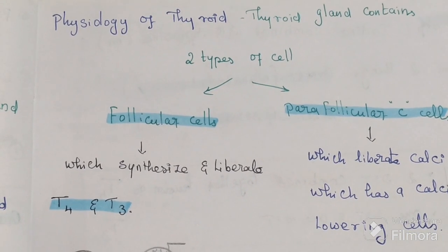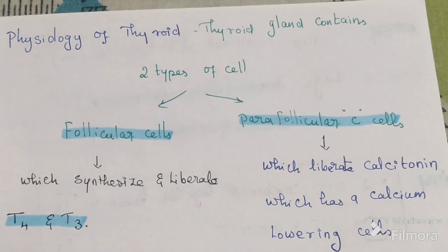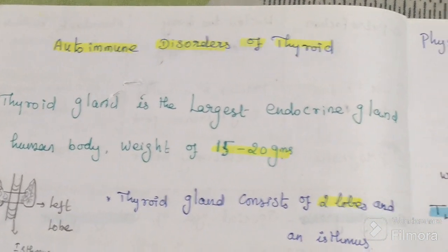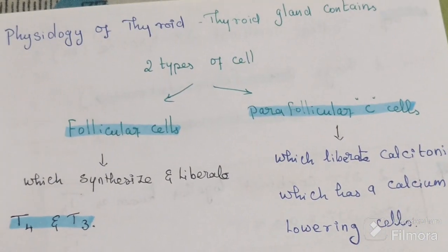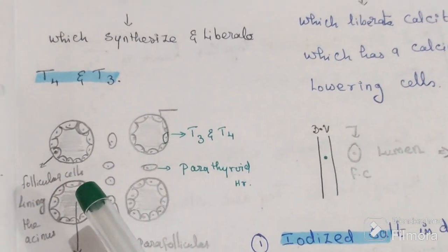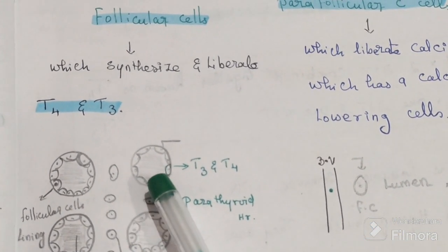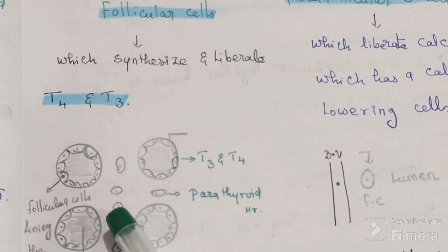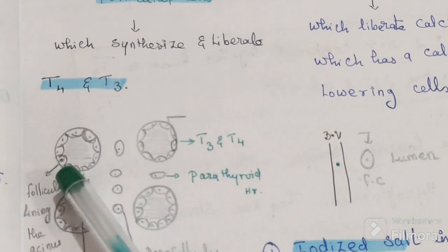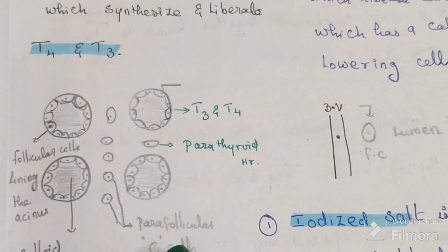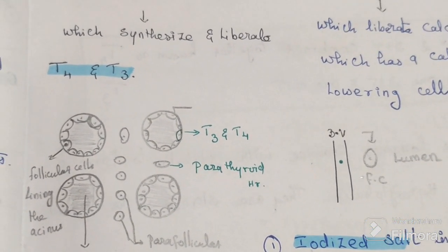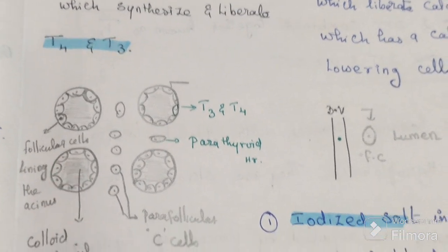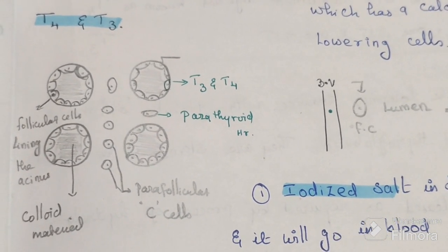The thyroid gland has two types of cells. The first is the follicular cell, which lines the acinus. The second is the parafollicular cell, also called the C cell. Follicular cells secrete T3 and T4 into the blood, while parafollicular cells secrete calcitonin.